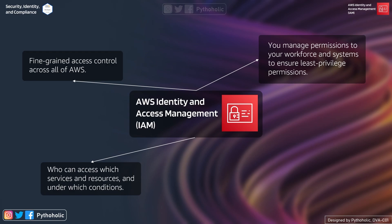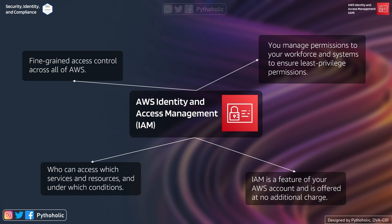For example, if I just want a user to have single read-only permission to a particular resource, I can do that — that is least privilege. It also provides the flexibility of who can access which services and resources, and under which conditions. Last but not least, IAM is a feature of your AWS account and is offered at no additional charges.